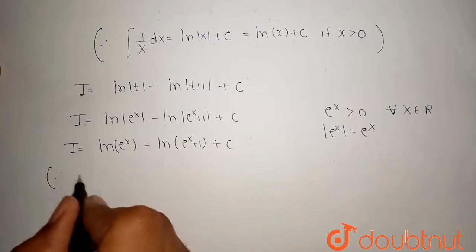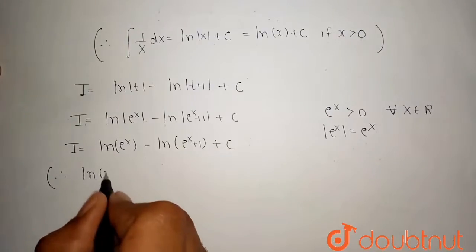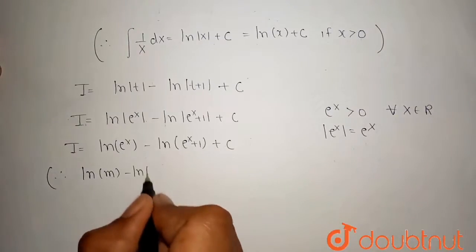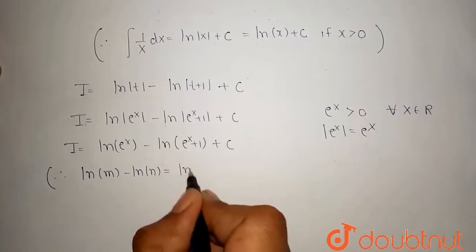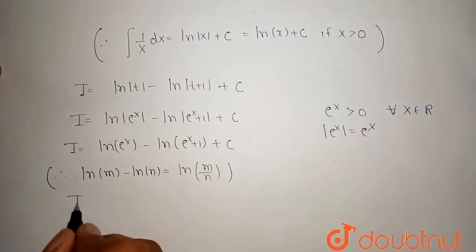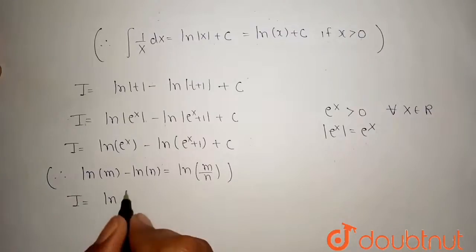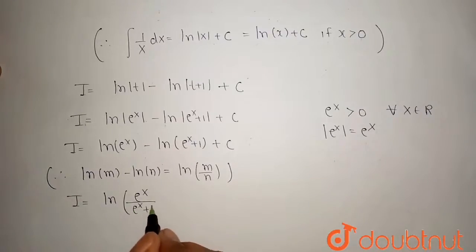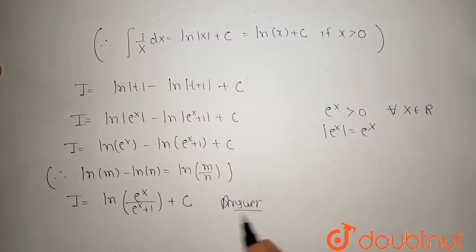After that, I can apply the property of log, which is ln of m minus ln of n is written as ln of m upon n. So our term becomes ln of e to the power x whole upon e to the power x plus 1 plus c. This is our final answer.